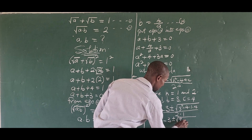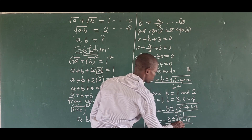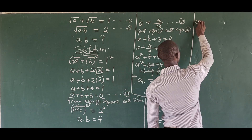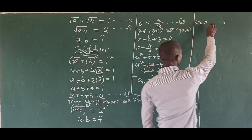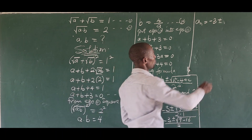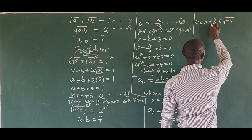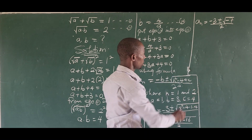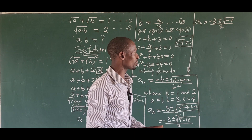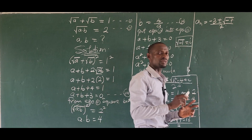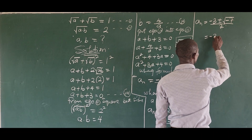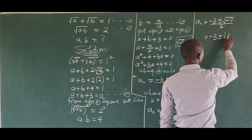This gives us minus three plus or minus sqrt(9 minus 16), all over two. That's minus three plus or minus sqrt(minus 7), all over two. Since sqrt(minus 1) equals iota (i), we can split sqrt(minus 7) as sqrt(minus 1) times sqrt(7), bringing in iota. So we have minus three plus or minus iota*sqrt(7), all over two.